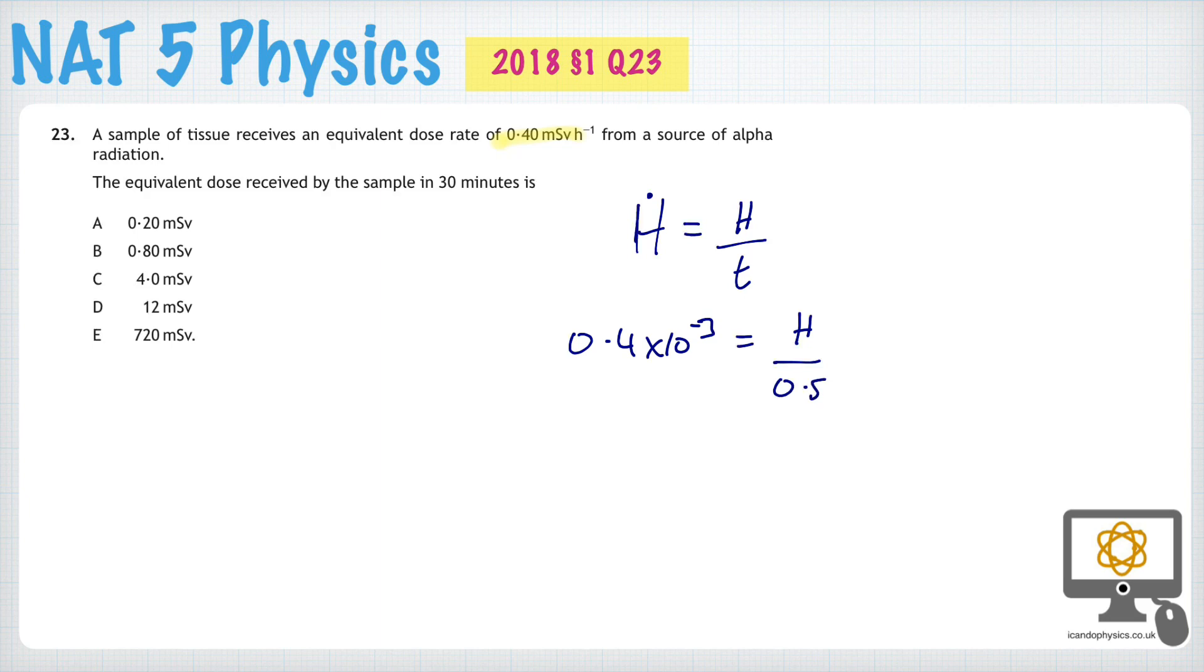And so, therefore, we can calculate H from that. H is 0.4 times 10 to the minus 3 times 0.5.